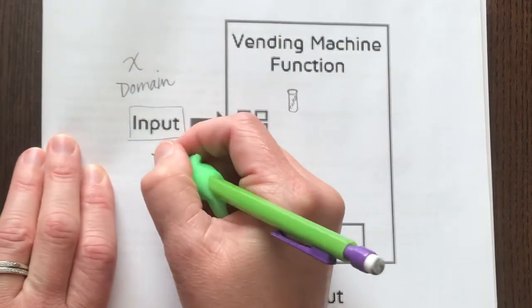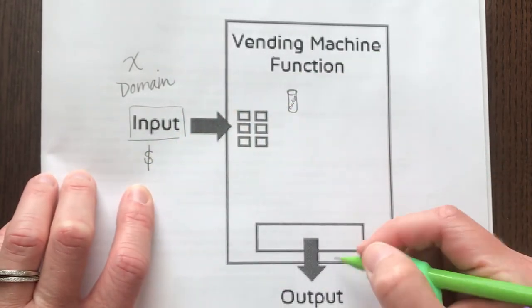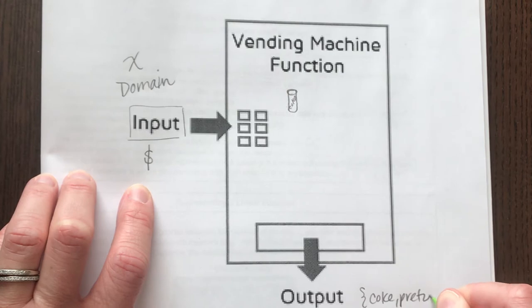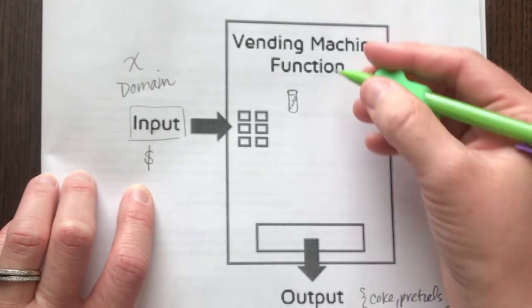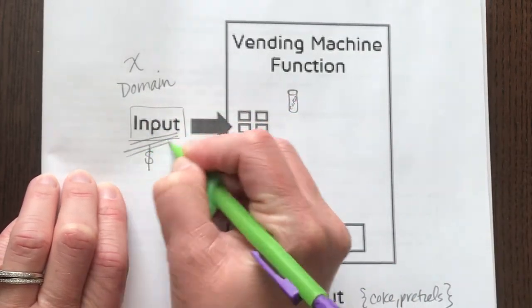Our domain would be we put into our vending machine money, and what we get out is your product, like a Coke or pretzels or some kind of snack. You could pick whatever out you want. Maybe it's a candy bar. But domain is what you put into the function.